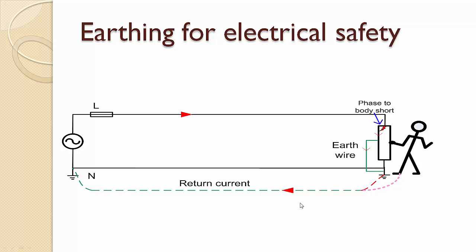As you can see here, suppose there is a short between the body and the phase. The current will pass through this path: from the line to the body of the equipment, to the earth wire, to the earth, and back to the supply. So it will pass through this path rather than through the person's body.